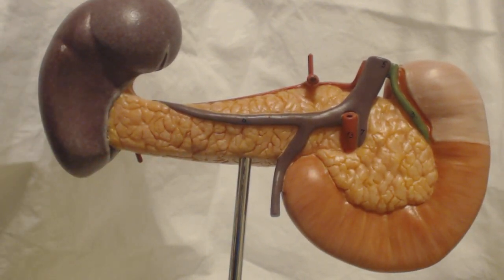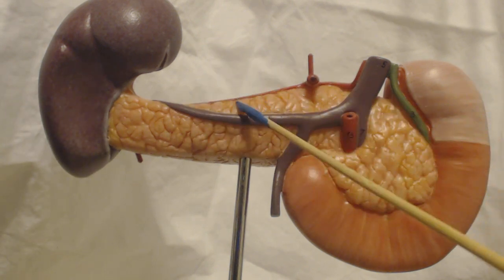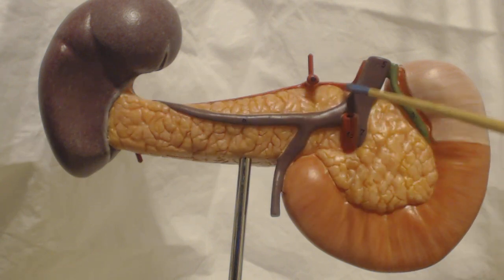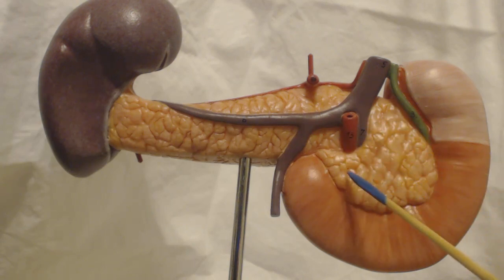So again, here is the spleen, here is your duodenum, here is the pancreas. This is the tail, body, the neck would be up here, and the head would be here.